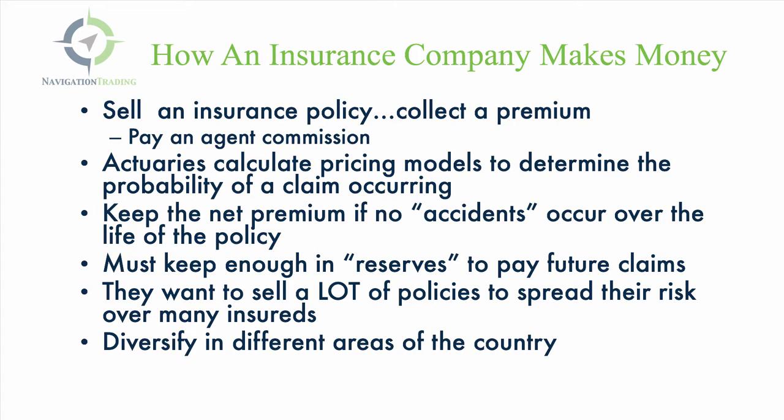The insurance company sells an insurance policy and they collect a premium. They pay an agent commission, they have overhead — their staff, their buildings, all their overhead. Their actuaries then calculate pricing models to determine the probability of a claim occurring — so the probability of somebody getting in an accident. And the insurance company keeps the net premium if no accidents occur over the life of that policy.